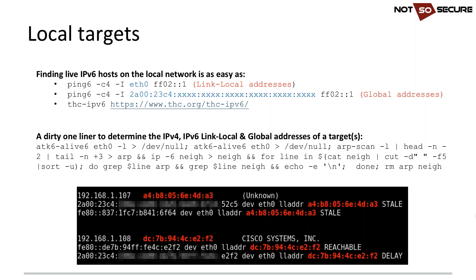If we want to see global addresses on the network, we use our own global address as the source and ping the ff02::1 multicast group — responses will be live hosts with global addresses. We can also use the THC (The Hacker's Choice) IPv6 toolset, renamed ATK6 on Kali, which does this more thoroughly. ATK6's alive6 tool essentially finds live IPv6 hosts.